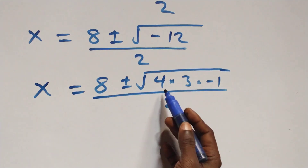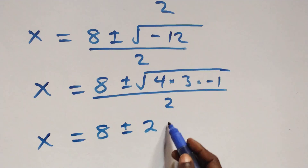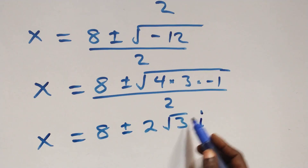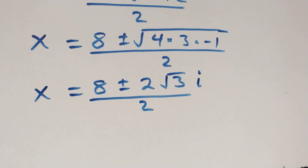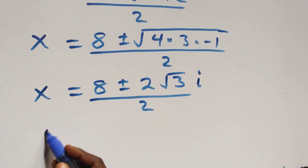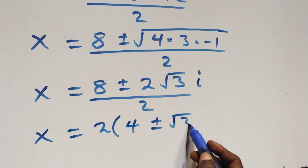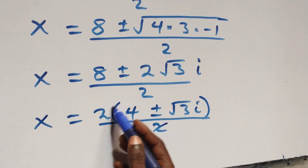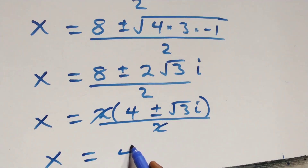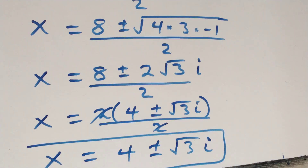At this here, when we separate this, root 4 that's 2, we take it out, and we have x equals to 8, plus or minus 2, then we have root 3, and minus 1 is i, over 2. Then here 2 is common, and we have x equals to 2, into bracket, 4 plus or minus root 3i, then over 2. The 2's cancel each other, and we have x equals to 4, plus or minus root 3i. Then the value of x — here we have 2 complex solutions.